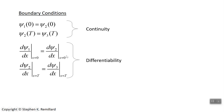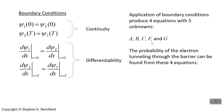The top two equations are continuity conditions — stating that the wave function at x equals zero is the same to the left as to the right, and likewise at x equals t. The next two equations are differentiability conditions — the derivative of the wave function at x equals zero is the same on both sides, and so on. Evaluating those gives four equations in the unknowns A, B, C, F, and G — five unknowns, four equations — but we already decided D is zero.